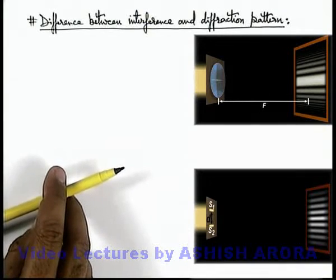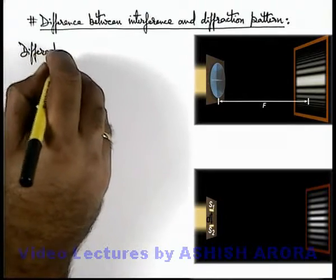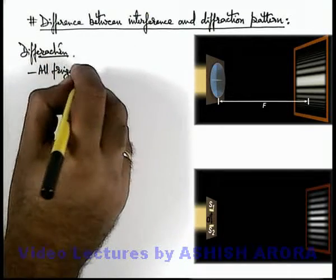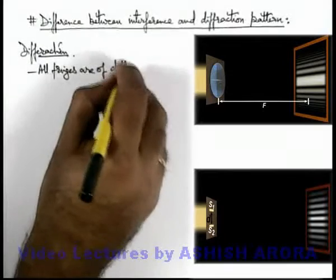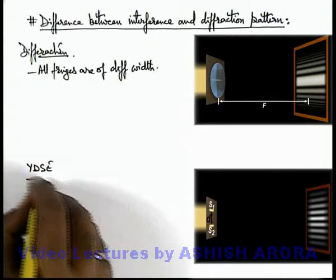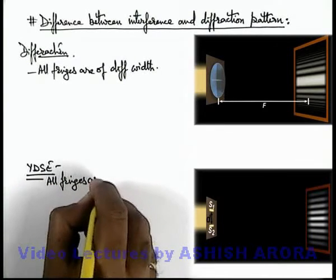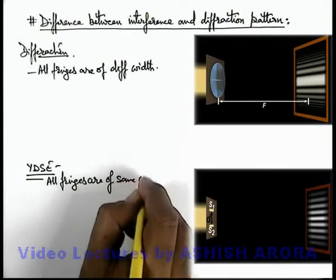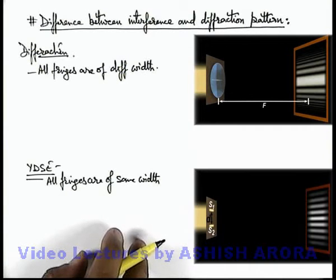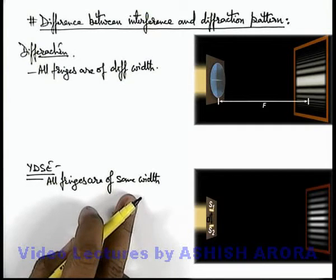If we carefully analyze the difference in the two situations, in case of diffraction by a single slit, all fringes are of different width. Whereas in case of YDSE, all fringes are of the same width. Actually, in case of YDSE, the region of interference is the overlapping of the common central diffraction maxima of the two slits, so all fringes are of the same width.